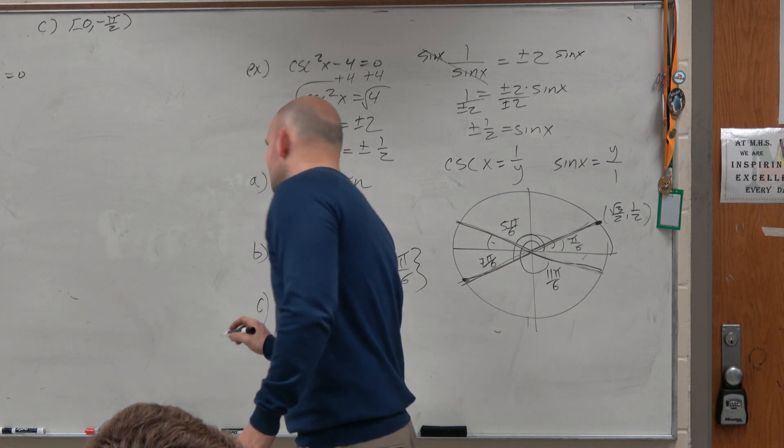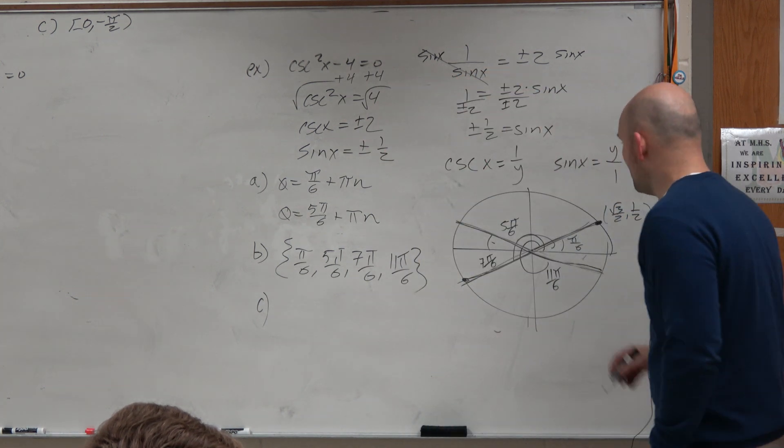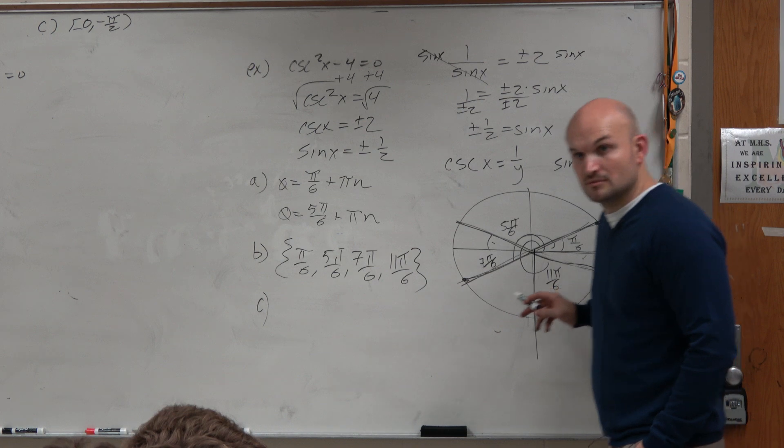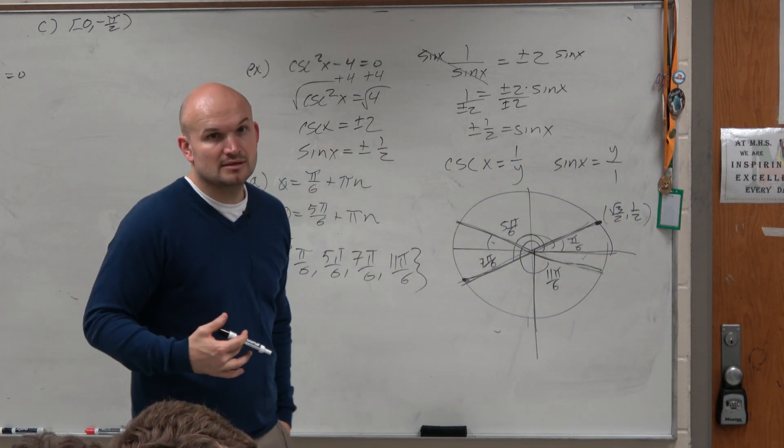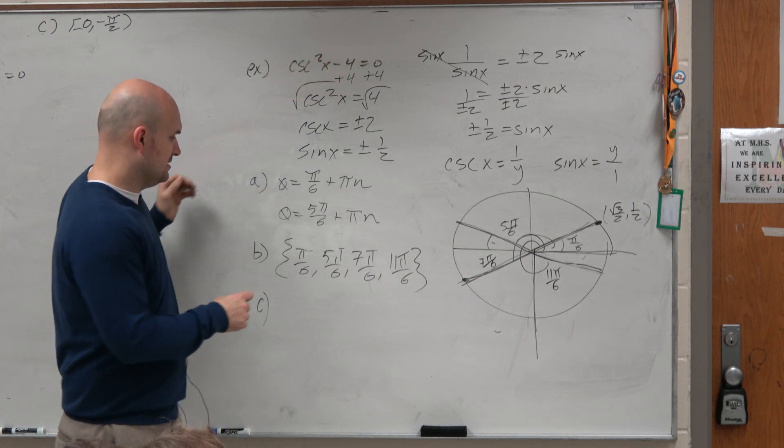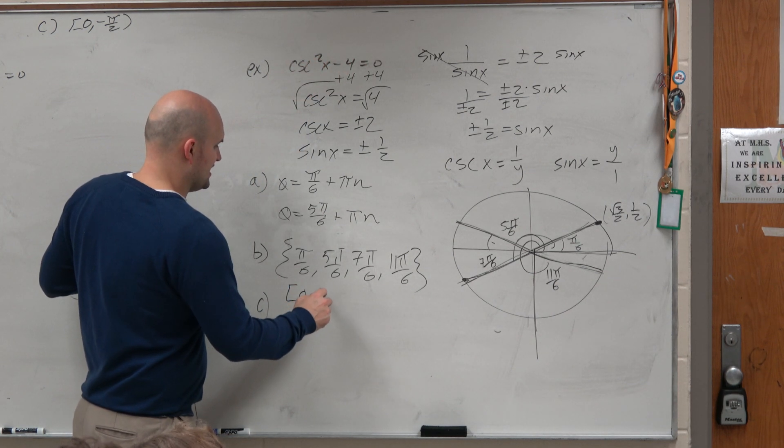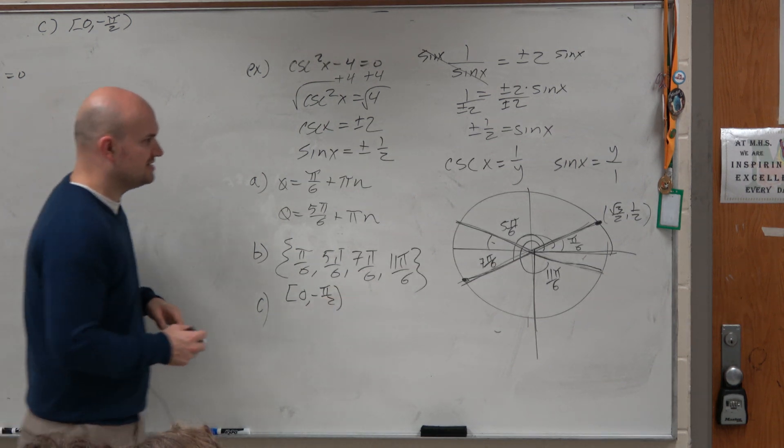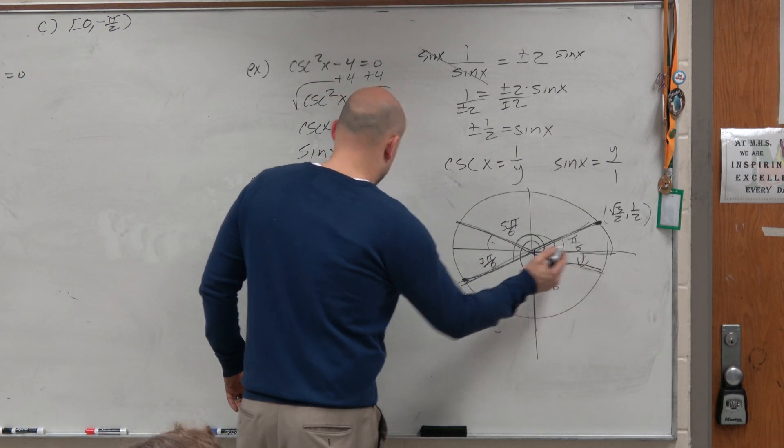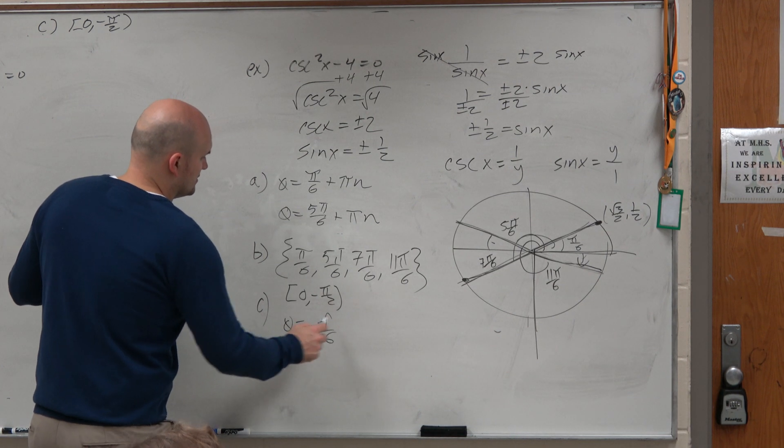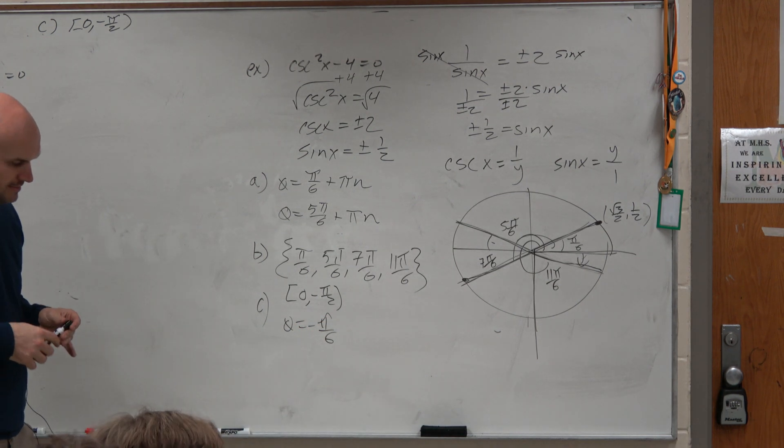And then c is what are all the angles between 0 and 2 pi? Do we have a solution there? Do we have a solution that's within that quadrant? Yes, but we have to find the angle then that fits our restriction between 0 and pi, 0 and negative pi halves. So the angle that fits that is negative pi over 6. So theta equals negative pi over 6. There you go.